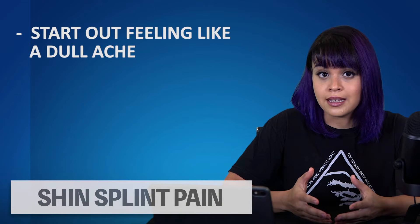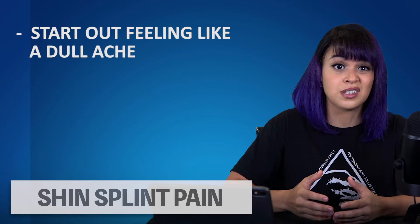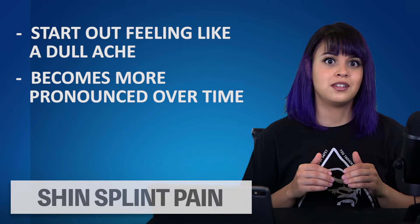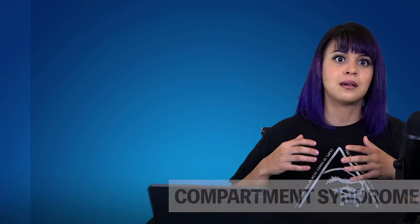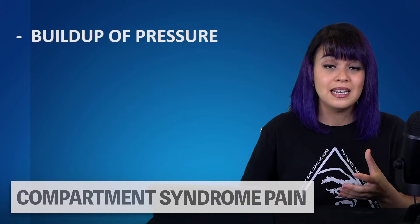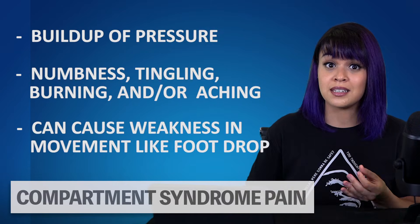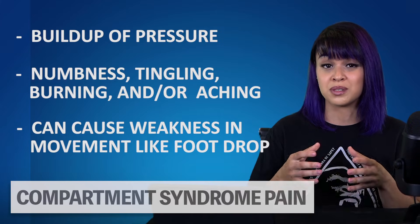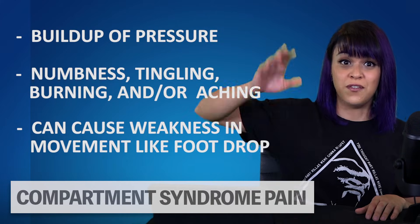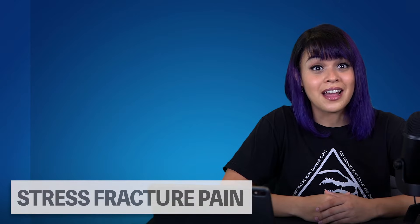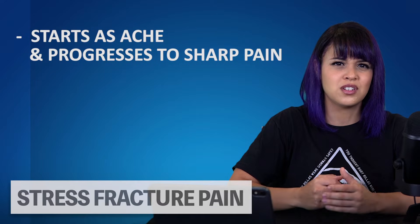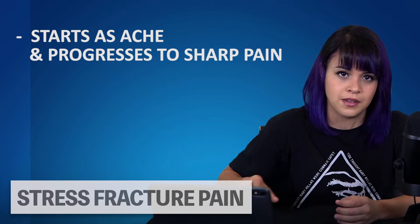What do they feel like? Shin splints often start out feeling like a dull ache, and as they worsen, the ache and tenderness will become more pronounced. Massaging shin splints can induce that 'hurt in a good way' kind of feeling. Anterior compartment syndrome pain can feel like a buildup of pressure as though the muscle were going to pop, as well as have numbness, tingling, burning, and aching. It can also cause weakness and foot drop. Stress fractures start out as an annoying ache, but then progress to a pronounced sharp pain in your bone that makes you wince every time you feel it.